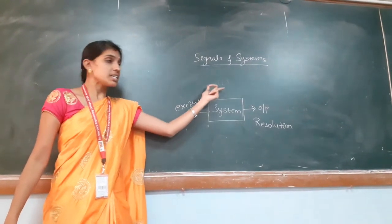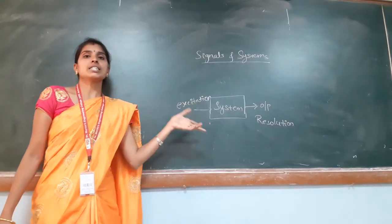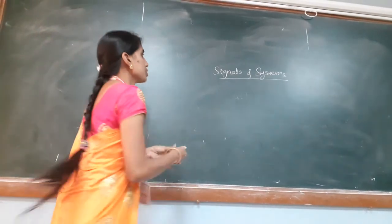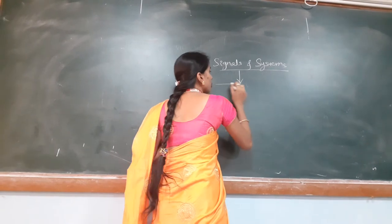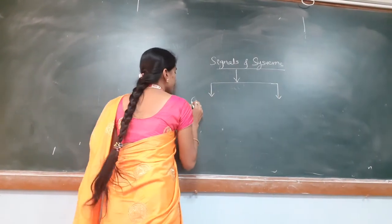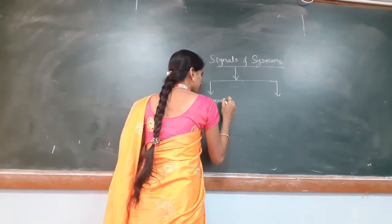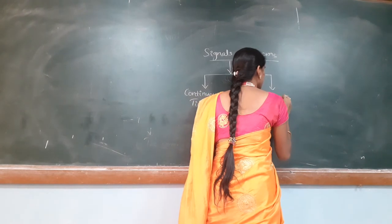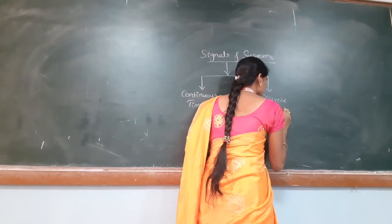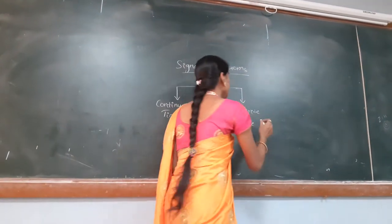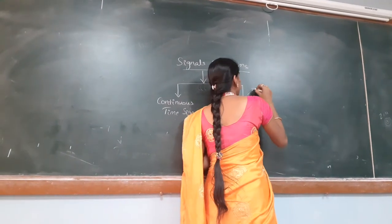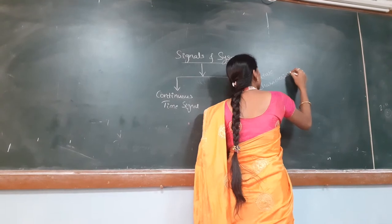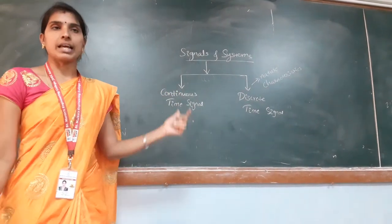What is the relation between signal and system? The signal will be processed by the system. Based upon their nature and characteristics, signals and systems are classified into two types: continuous time signal and discrete time signal.